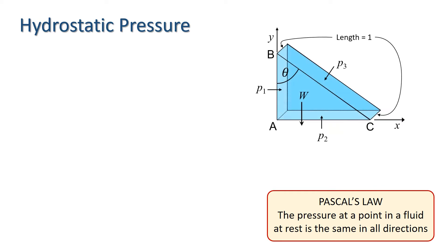Consider a small triangular prism of unit length within a fluid at rest. Since the fluid is at rest, the sum of the forces acting on that prism must be zero. If there's any unequilibriated force, the fluid will flow. Thus, if we consider the forces in the horizontal and vertical directions, we have sigma fx equals zero and sigma fy equals zero.